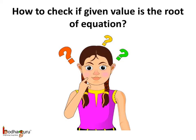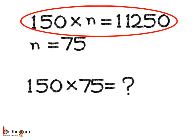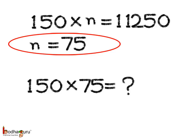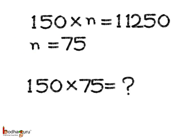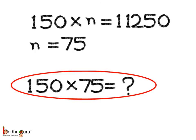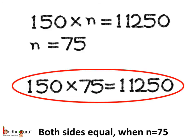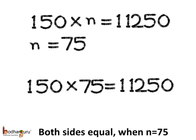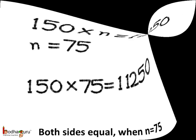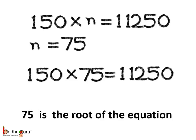Now, how to check if a given value is the root of the equation or not? For the equation 150n equal to 11,250, the root is 75, and this is the value of N. If we put 75 instead of N, then 150 multiplied by 75 is equal to 11,250. So, we see the left hand side is equal to the right hand side. Thus, 75 is the root, as the root is the value of the variable for which the left hand side of the equation is equal to the right hand side of the equation.